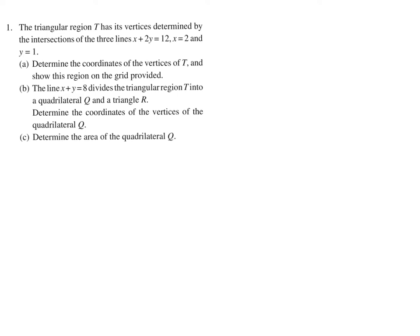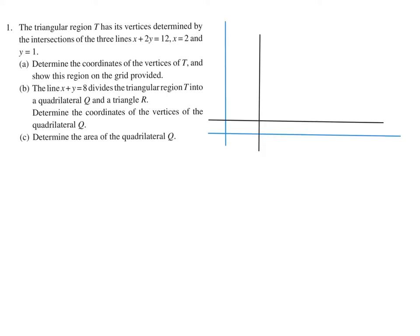I don't have a grid, so I'll just draw a basic diagram. We have the x-axis, the y-axis, and a couple of these lines are pretty easy. x equals 2 is just a vertical line, and y equals 1 is a horizontal line, both extending indefinitely in either direction.